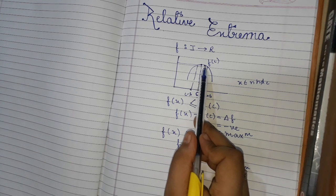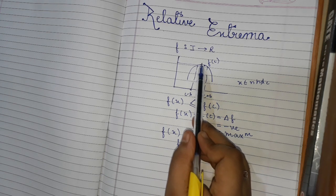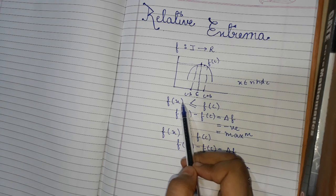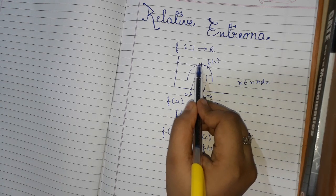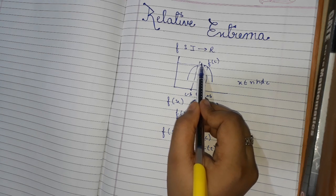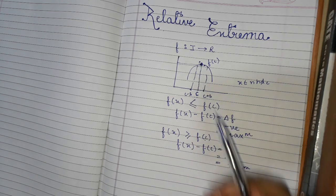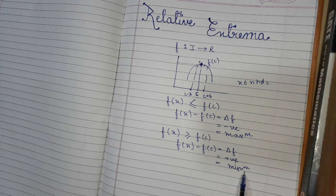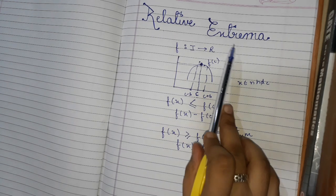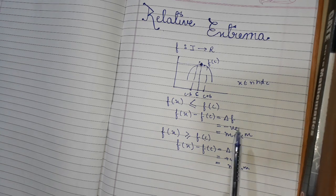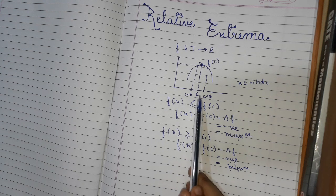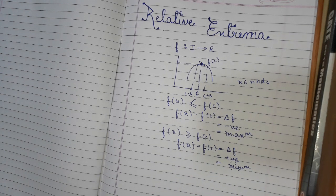So clearly if we have a function f, and the value of f(x) compared to f(c): if f(x) minus f(c) is a positive quantity, we say that relative minima exists at that point. Relative extrema means that if either relative maxima or relative minima exist at an interior point c, then the function is said to have relative extrema at c.